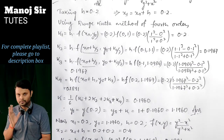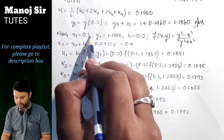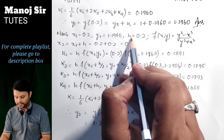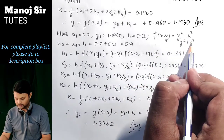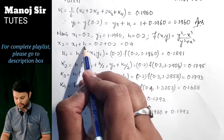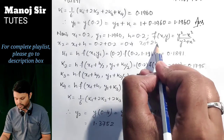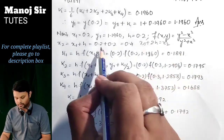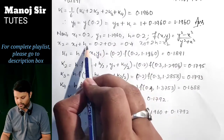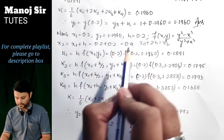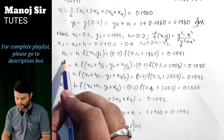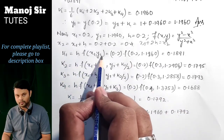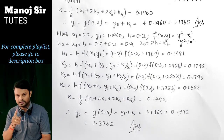Now we find the value of y when x = 0.4. We now have x₁ = 0.2, y₁ = 1.1960, h = 0.2, and the same function f(x, y) = (y² - x²)/(y² + x²). We compute x₂ = x₁ + h = 0.2 + 0.2 = 0.4. Since we are finding y₂, we use subscript 1 in the formulas. k₁ = h·f(x₁, y₁) = 0.2·f(0.2, 1.1960).